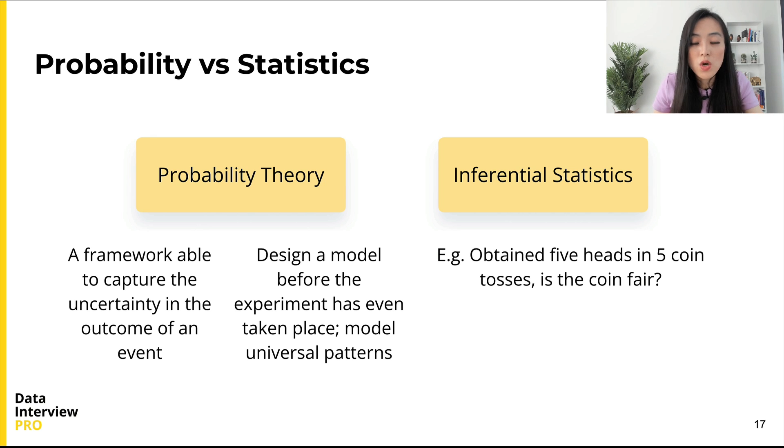For example, we might be told that we conducted five coin tosses and obtained five heads in a row, and ask what the likelihood is that the coin was a fair coin.